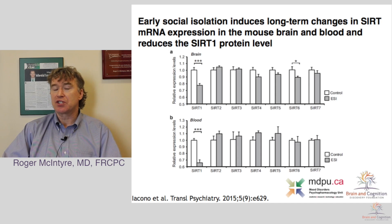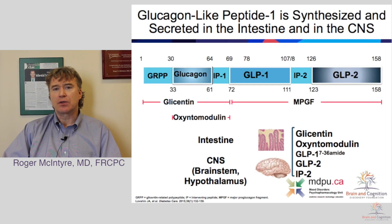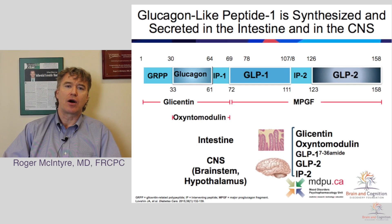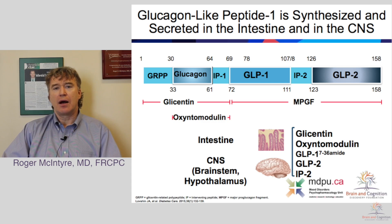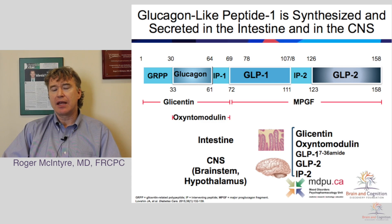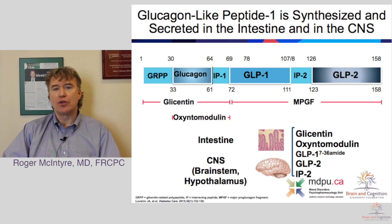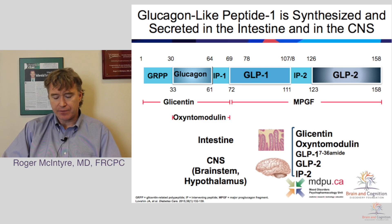There are some interesting approaches to sirtuin enhancement: caloric restriction and resveratrol, the active moiety in red wine, have demonstrated sirtuin-enhancing properties. Our group has been very interested in incretins — gut peptides that communicate to the brain as a satiety signal, among other things. Incretins are also produced in the brain in the nucleus tractus solitarius, which has communication to reward circuitry. GLP-1 receptors, messenger RNA, and protein are distributed throughout the cognitive control networks, providing the basis for studying this protein system in individuals with mood disorders.